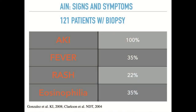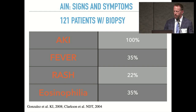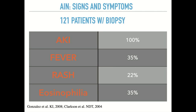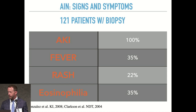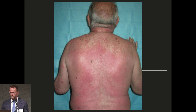Here are the signs and symptoms we see with interstitial nephritis. All patients would have acute kidney injury — 100%. But the classic triad — fever at about 35%, rash at 22%, and eosinophilia at about 35% — is not always present. Seeing all three together is closer to 10% or less. The classic rash is a kind of erythema multiforme, a blanchy rash usually across the chest and back, and very itchy.